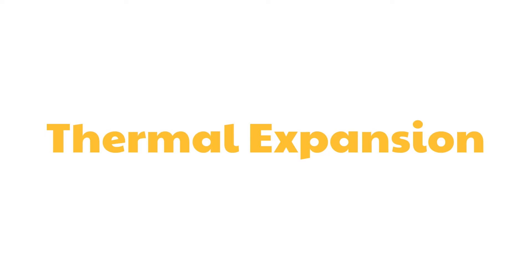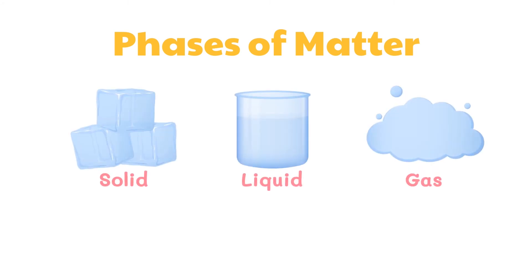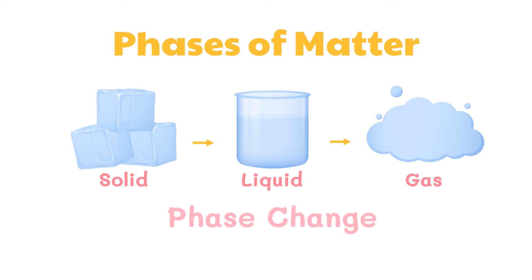In physics, this is called thermal expansion, which is another effect of heat transfer. Thermal expansion does not apply only to the liquid inside the thermometer — it applies to almost everything around us, be it a solid, a liquid, or a gas. There is another change that may occur when heat is added to or taken out from an object. An ice may melt into liquid water, and water may evaporate when exposed to heat. These are called phase changes.